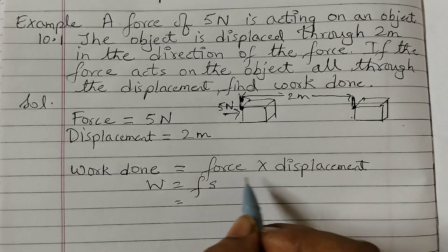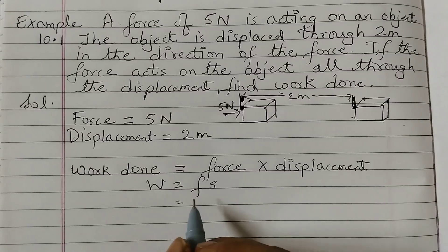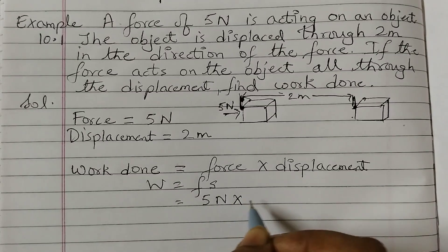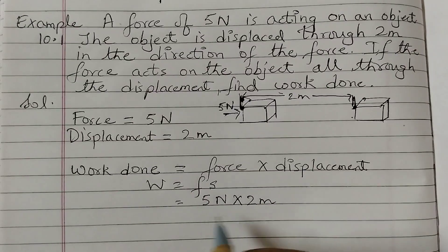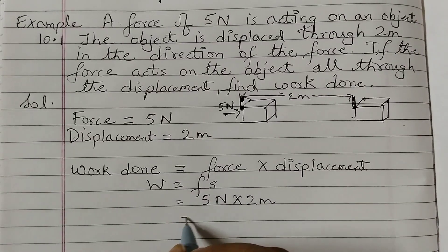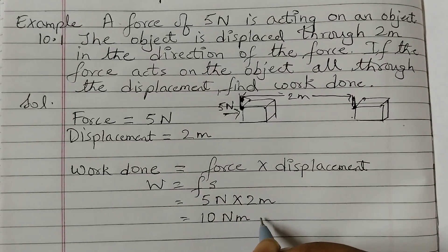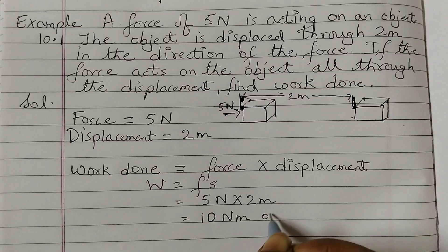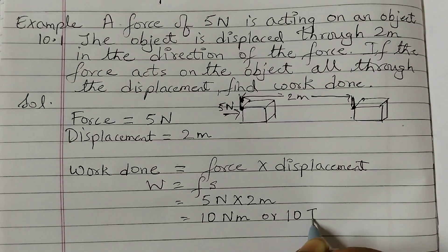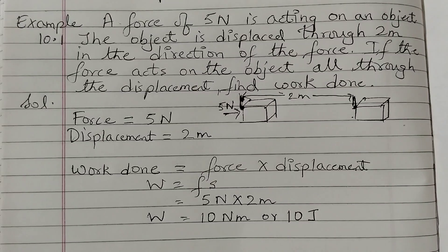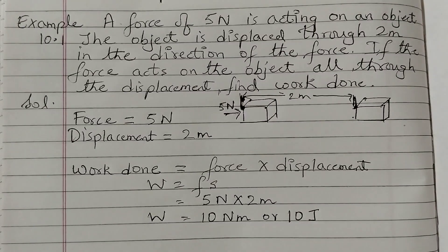The formula for work done is force into displacement. So force is 5 Newton into displacement 2 meters, which gives 10 Newton meter. The other unit of work done is joules, so we can say 10 joules. And that is your work done. That's all for now, see you in the next video.